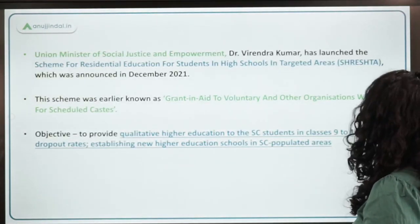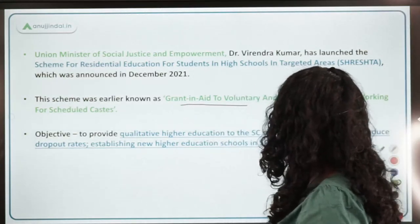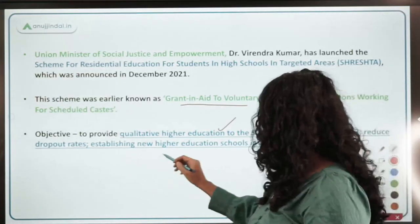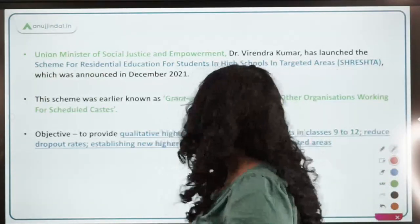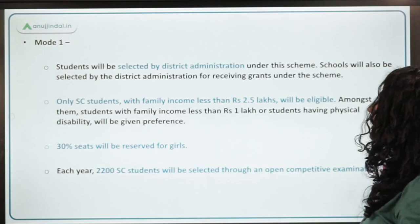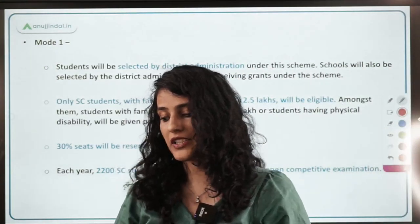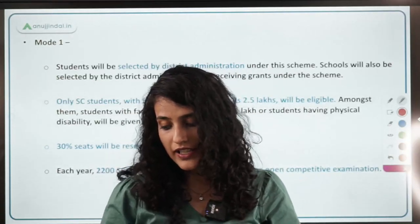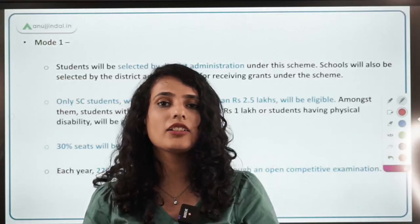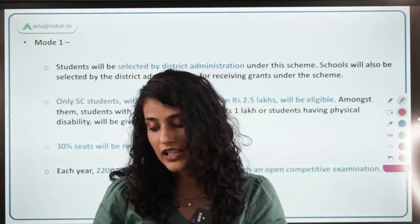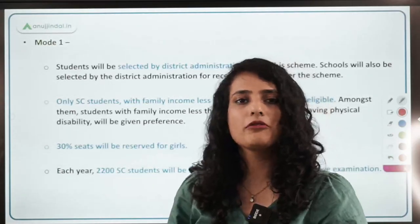Let's know a little detail about the scheme. It was earlier known as 'Grant-in-Aid to Voluntary and Other Organizations.' Its aim is to provide qualitative higher education to SC students, reduce dropout rates, and establish new higher education schools in SC-populated areas. There will be two modes through which the scheme will be implemented. The second mode is for students who have already enrolled in the erstwhile Grant-in-Aid scheme — they will be continued till high school level after duly getting approval from the screening committee.